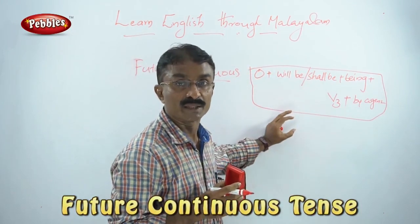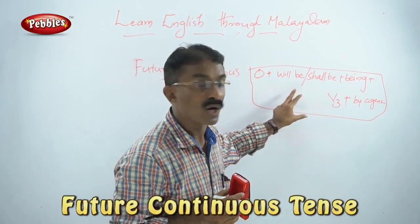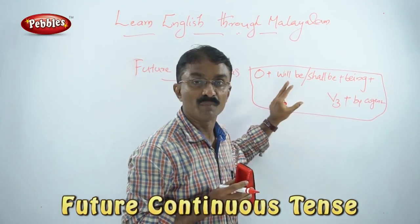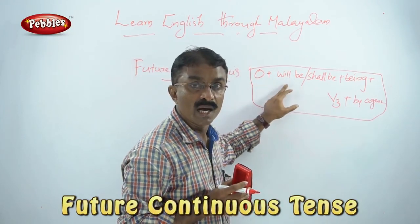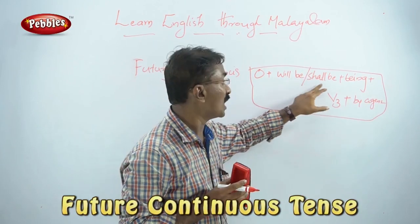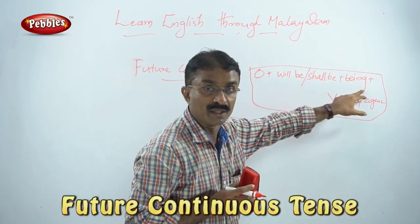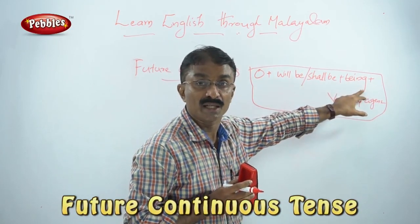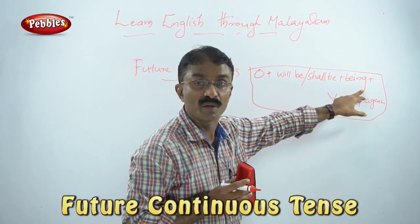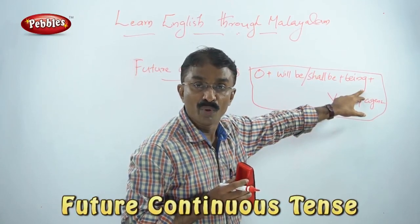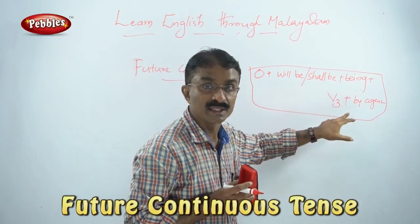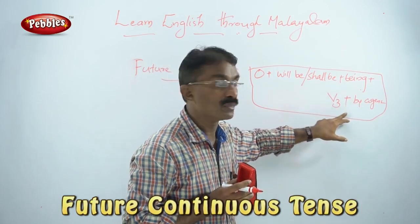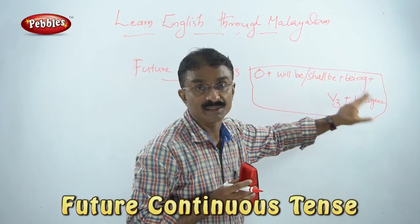So that we can understand it — if we learn the forms of the verb, in English we can do more things. The passive structure is: Object plus V3 form of the verb, plus by agent.